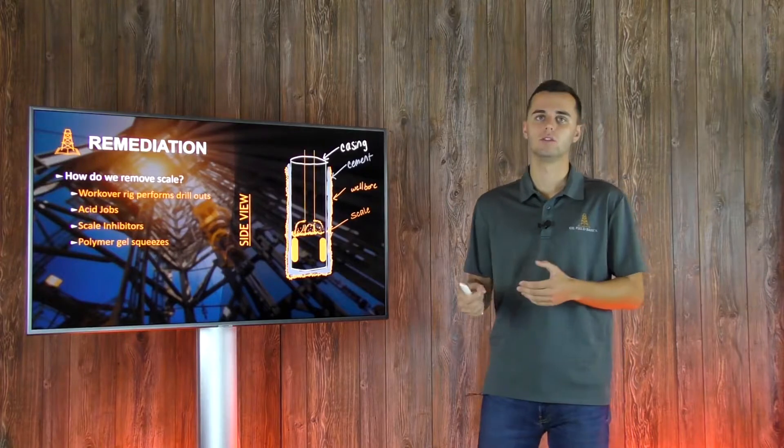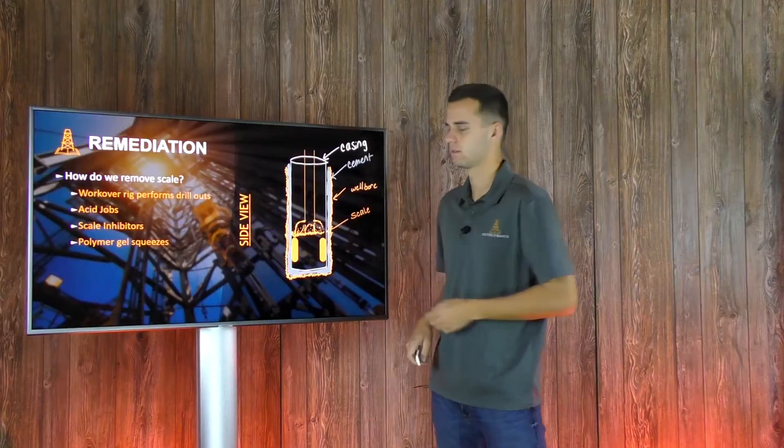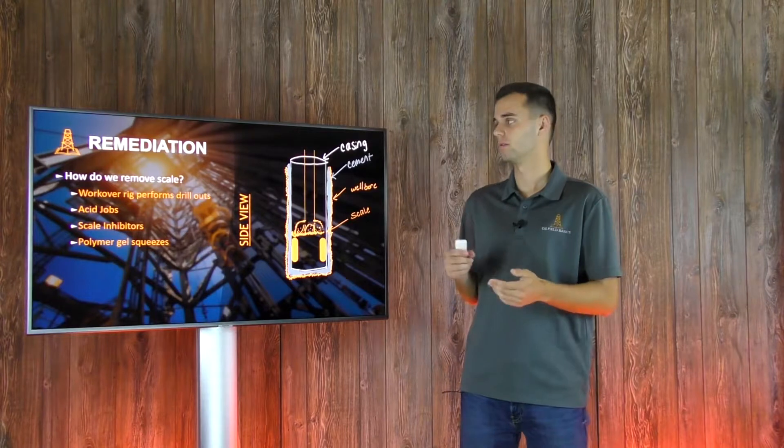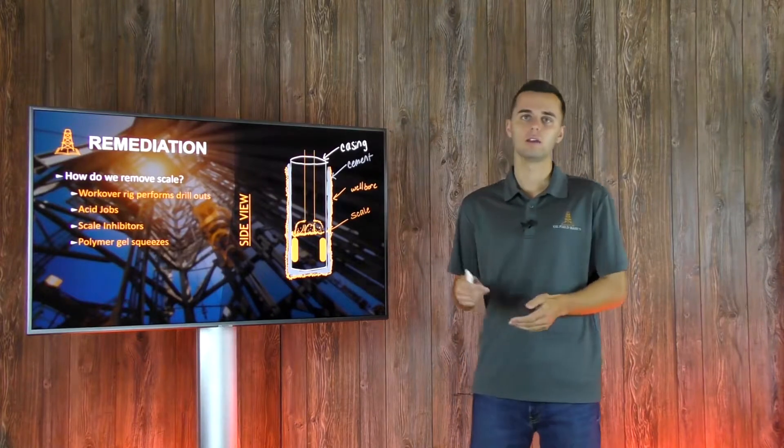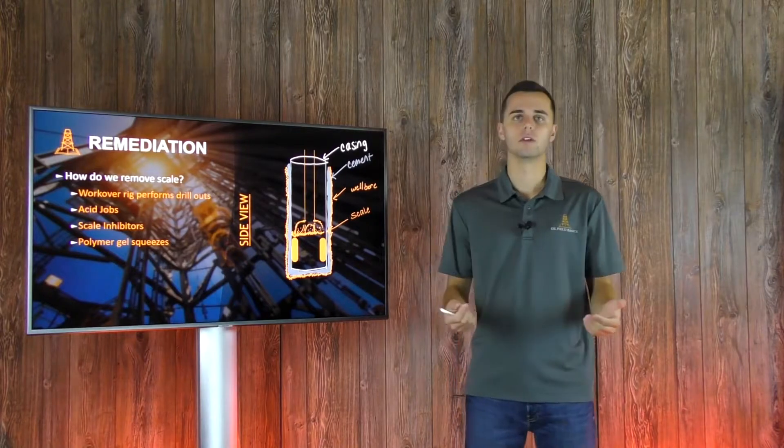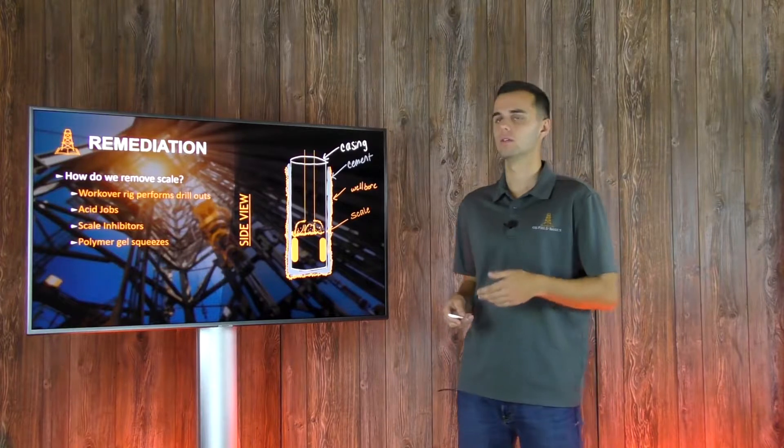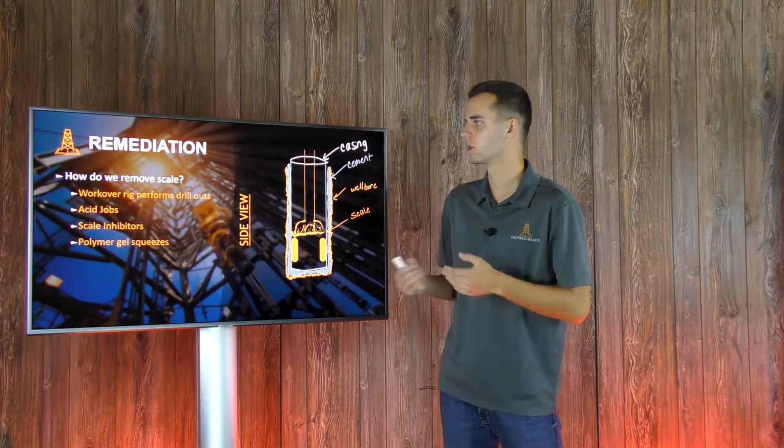Most commonly, you will have a workover rig come on location. The workover rig will rig up to the well, remove the tubing out of the well and then run a bit all the way to bottom, removing all the scale that's within your lateral. This is basically the most guaranteed way of removing scale because you're running a physical bit to bottom. You're seeing your returns. You've got a measured depth of where your bit is. Once you hit your total depth, your TD, then you know that there's no more scale within the lateral. You've basically drilled it all out and your well could be put back to production at full volume. This is just an image of that occurring with a workover rig.